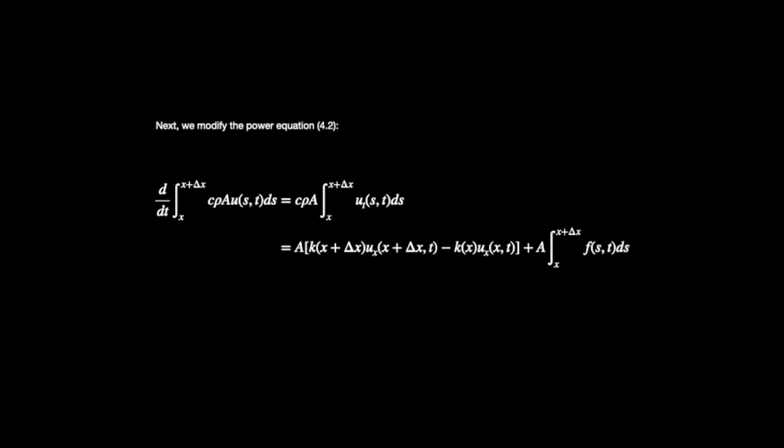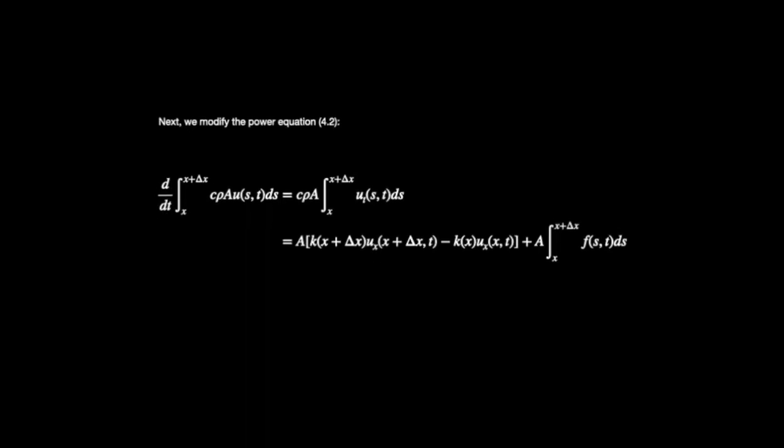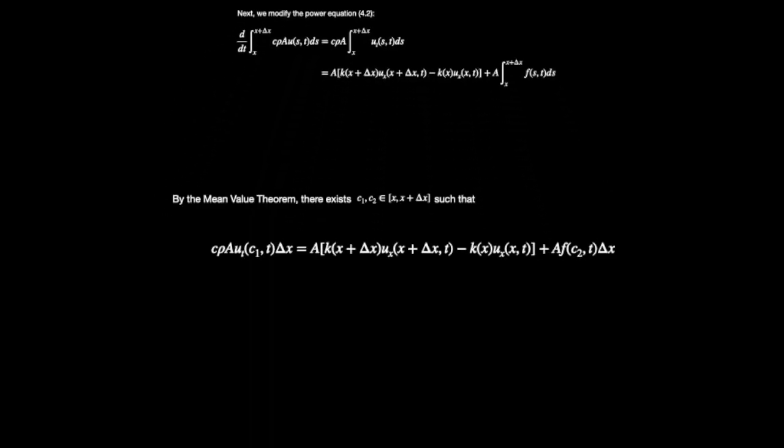Now we're going to start by modifying equation 4.2. The left-hand side remains the same. We're going to take the time derivative of the total energy within the region and then set it equal to the flux across the boundaries plus whatever the internal heat source is adding into it.